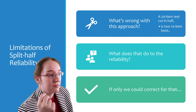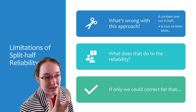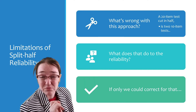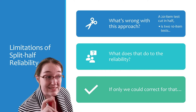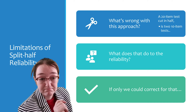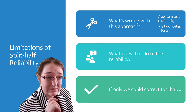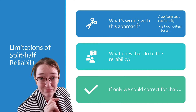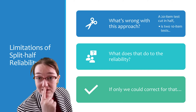So there are a ton of issues with this approach, which is why I have to cover how to fix that limitation in the same module. What's wrong with this? You have a 20-item test that you've cut in half. I want you to think about domain sampling theory. What happens when you cut your test in half? You have half of whatever you thought was representative of your domain.